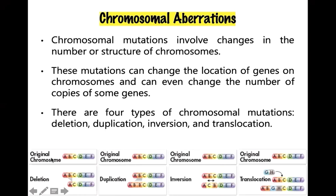With chromosomal mutations, you can have deletion, duplication, inversion, and translocation. Using letters A, B, C: in deletion, B is removed, leaving A and C. In duplication, there is a doubling of a gene, giving BB. In inversion, the sequence is reversed. In translocation, part of one chromosome moves to another. Deletion occurs during pairing in meiosis.